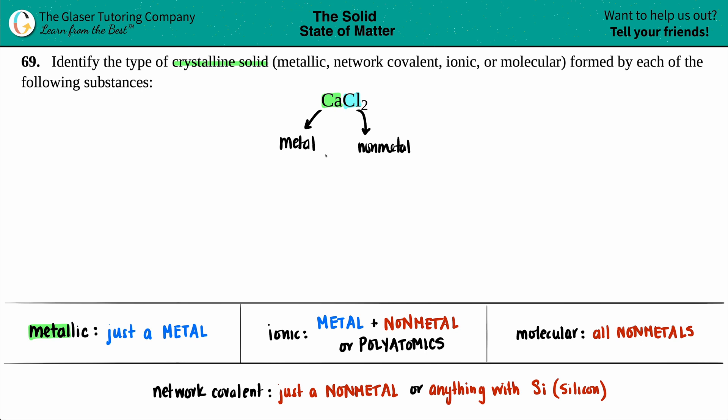Look what we got here: we got a metal calcium, we got a non-metal chlorine. So it's a metal and a non-metal—this checks out. This would be an ionic crystalline solid.